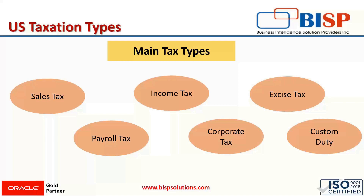Federal income taxes are applied to all forms of income, like wages or capital gains. Regarding corporate tax: corporations are a separate legal entity and are subject to corporation tax on taxable income. Corporation tax rates are different from personal tax rates. Corporation earnings are subject to double taxation — corporations pay taxes on their earnings, and then they pay dividends to their stockholders, which are subject to capital gains tax.